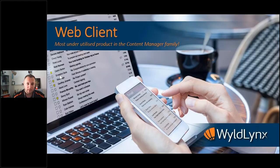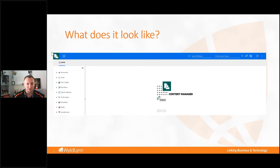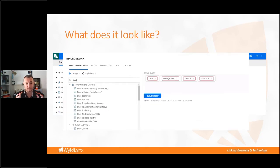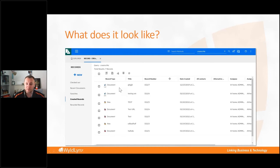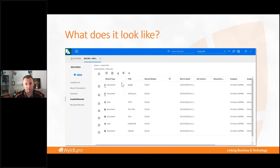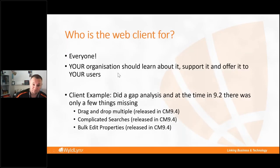The web client is continually improving. Out of the box it has a navigation pane, action pane, property pane, and supports full complex searches just like the thick client. In version 10.1, a new grid view was added with configurable columns — similar to the thick client — allowing users to switch between grid view and list view. This is a significant step toward helping organizations move from the desktop client to the web client.